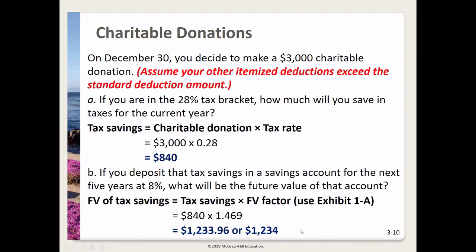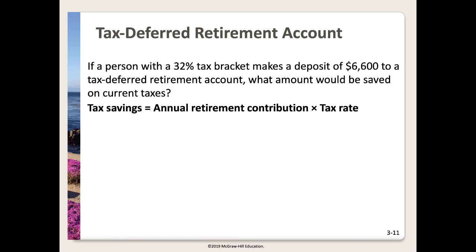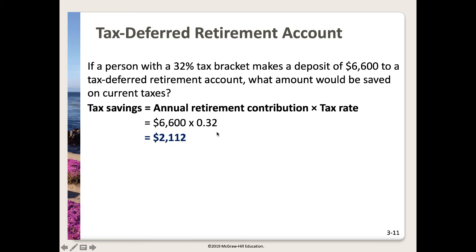Be careful of whatever rounding requirements are on the homework. If you have a slight rounding error, you can email and receive credit manually. For tax-deferred retirement accounts: a person in the 32% tax bracket who makes a deposit of $6,600 to a tax-deferred retirement account would have tax savings equal to the annual retirement contribution times the tax rate — $6,600 times 0.32 — giving tax savings of $2,112.